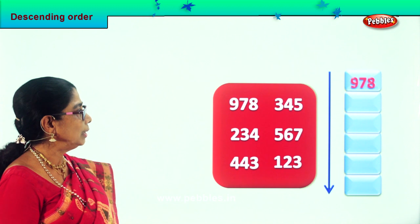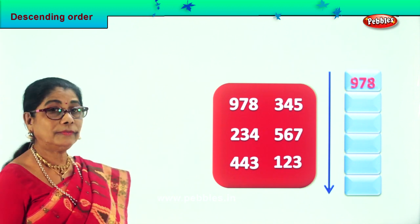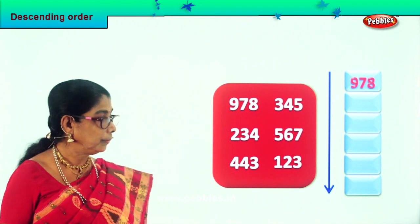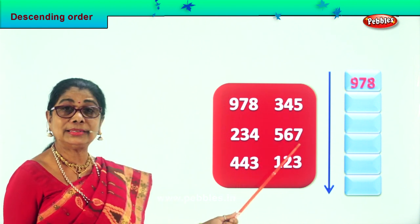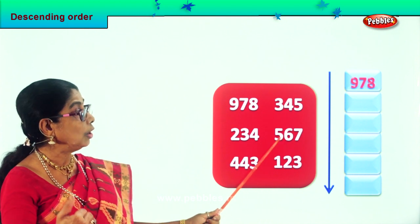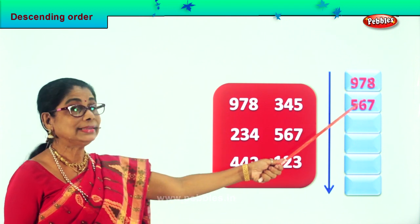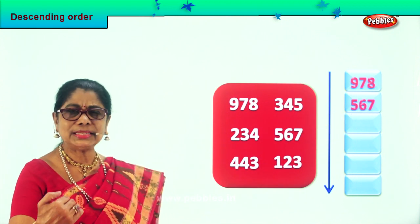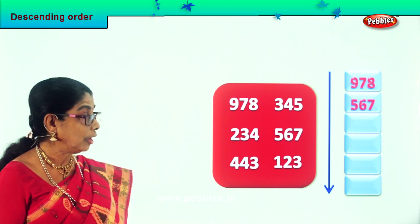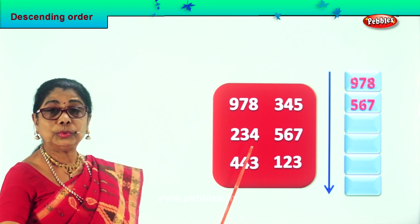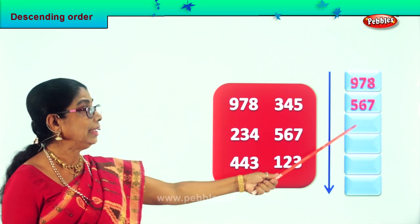Now we have to look for the next smaller number. We do not have eight hundred, we do not have seven hundred, we do not have six hundred. But we have five hundred sixty-seven — that's the next smaller number that we take and put it over here. Five hundred sixty-seven. Which is the next small number? Do we have four hundred here? Yes, we have four hundred forty-three, which is smaller than five hundred, so we put it here. Four hundred forty-three.